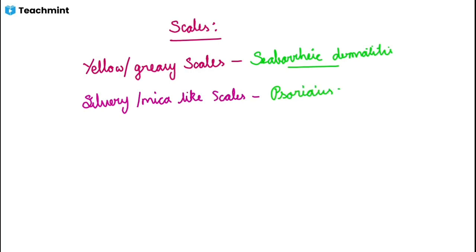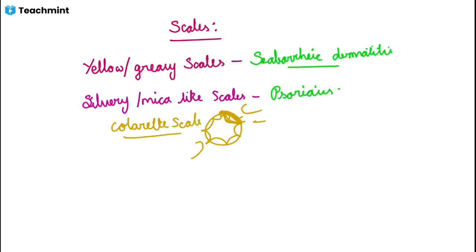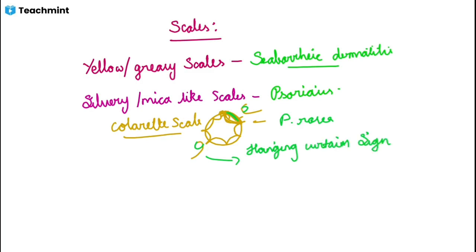Next come collarette scales. When you stretch the lesion from both sides with your fingers, the scales open from one end and remain adherent to the lesion on the other end — one end is free and one end is attached. This sign is called the hanging curtain sign. The hanging curtain sign is seen in pityriasis rosea.